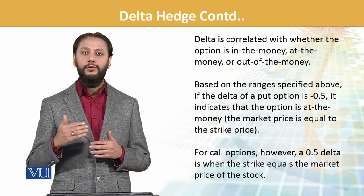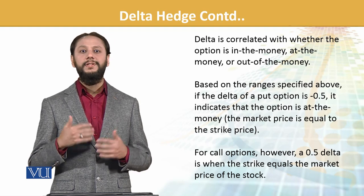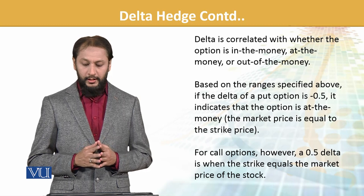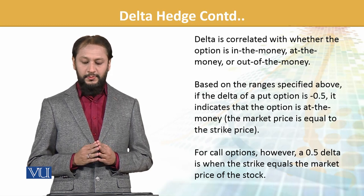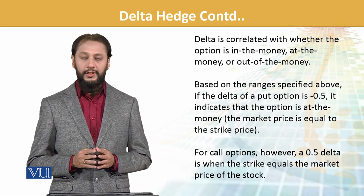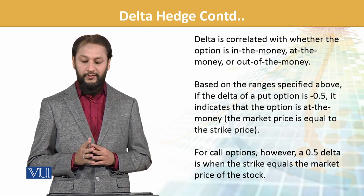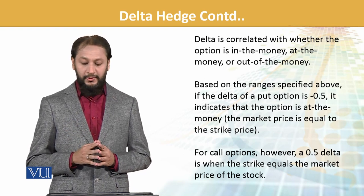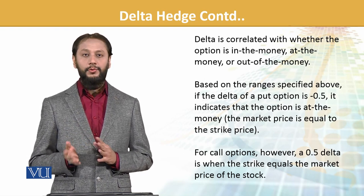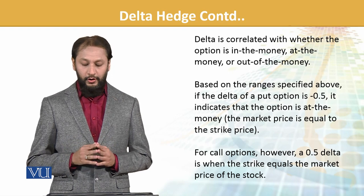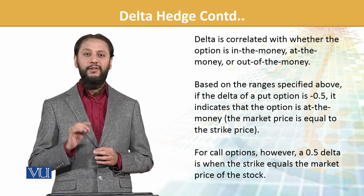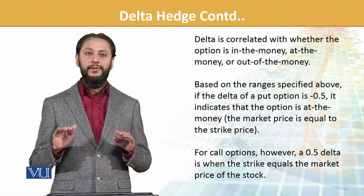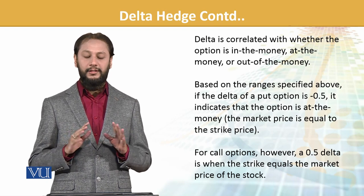The implication will be greater compared to those options which are out of the money. If delta of a put is minus 0.5, it indicates the option is at the money — the market price is equal to the strike price. For a call, 0.5 delta is when the strike price equals the market value، یعنی at the money پہ جب یہ situation آجاتی ہے۔